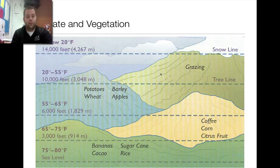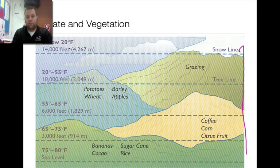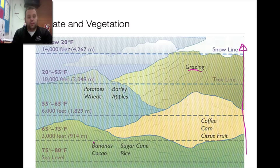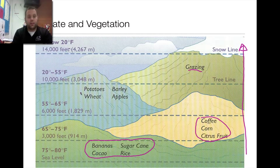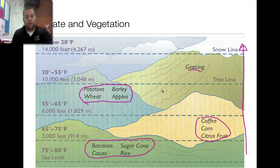Going along with elevation: starting at lower elevation, sea level and up — the higher you go, the less you can grow. Above the tree line, above 10,000 feet, the land is only really good for grazing animals. At sea level to 3,000 feet you can grow cocoa (used to make chocolate), sugar cane, rice, and bananas. From 3,000 to 6,000 feet, only coffee, corn, and citrus fruit can grow. From 6,000 to 10,000 feet, wheat, barley, apples, and potatoes — more starchy foods — can grow. Depending where you live influences what your diet is and what you can grow and eat.